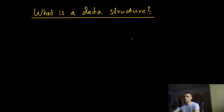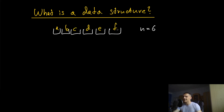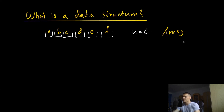The first question is: what is a data structure? A data structure is essentially just a way or a format for accessing, storing, managing, organizing, or as the name suggests, structuring data or information. For example, from programming you already know what an array is. An array is just a collection that has a fixed size. Here we have an array of size six with elements a, b, c, d, e, and f. The array is a data structure.